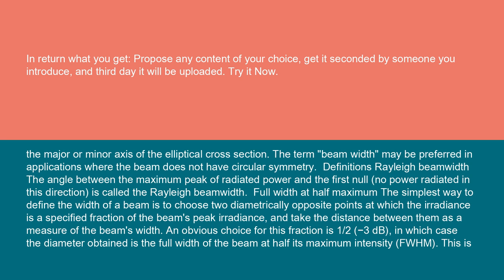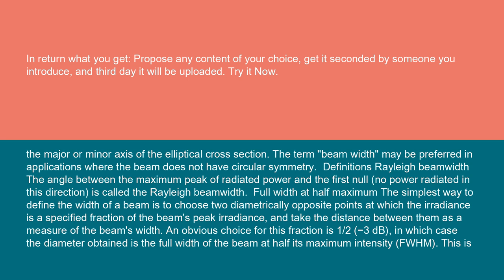Full width at half maximum - the simplest way to define the width of a beam is to choose two diametrically opposite points at which the irradiance is a specified fraction of the beam's peak irradiance and take the distance between them as a measure of the beam's width. An obvious choice for this fraction is one-half (minus three dB), in which case the diameter obtained is the full width of the beam at half its maximum intensity, FWHM. This is also called the half power beam width, HPBW.